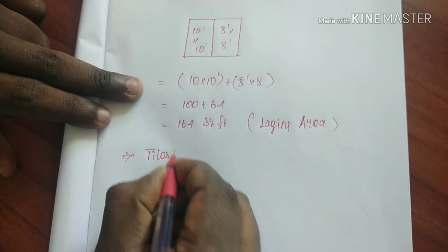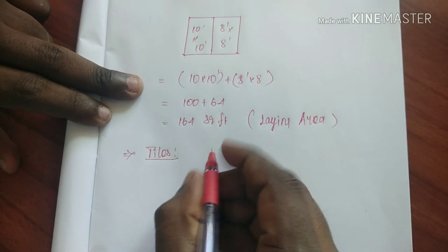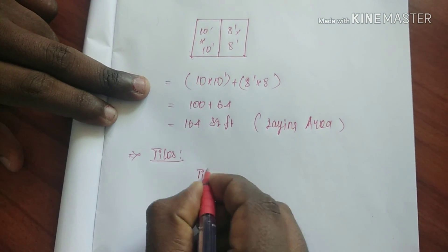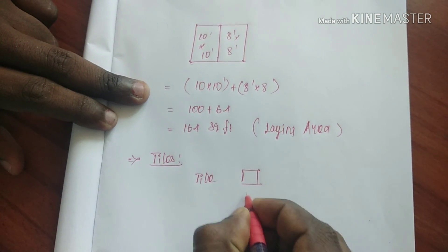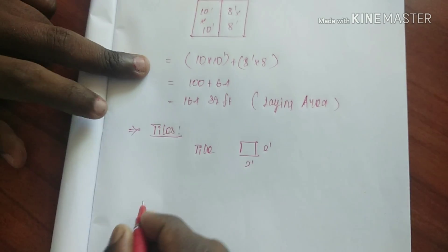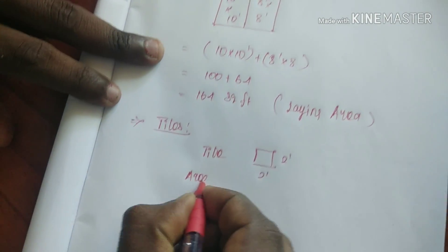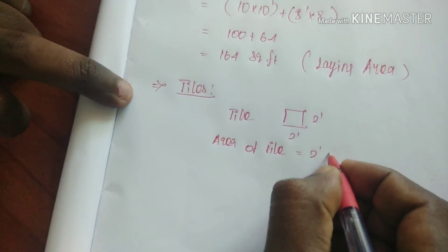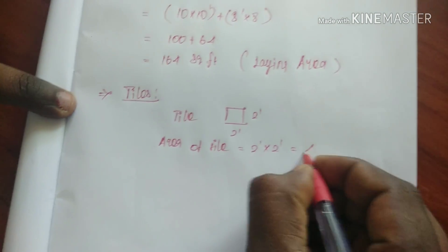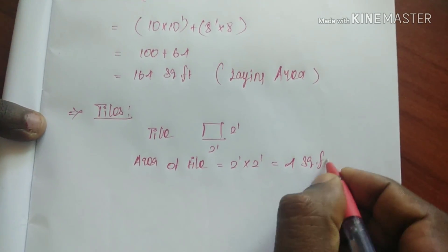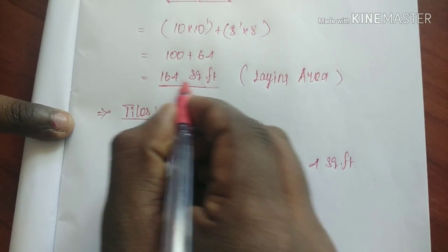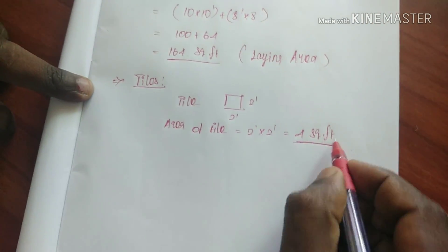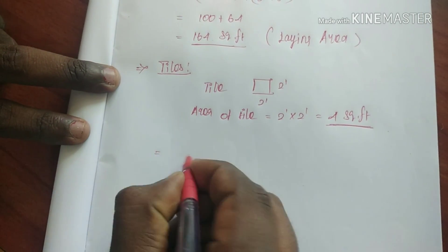Tiles are a certain size. Now we can use the tiles. One tile is 4 square feet. The total tile laying area is 164 square feet and one tile is 4 square feet.